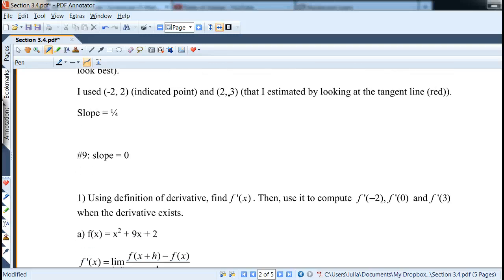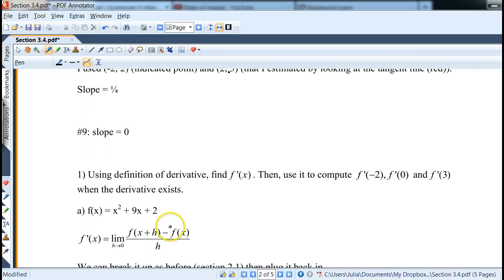Now let's take a look at computation. It's a little bit different, but also similar to what we've done last time. Notice how what we would like to do in this problem is using definition of derivative, find derivative function f prime of x, then use it to compute at three different points, f prime of negative 2, f prime of 0, or f prime of 3.